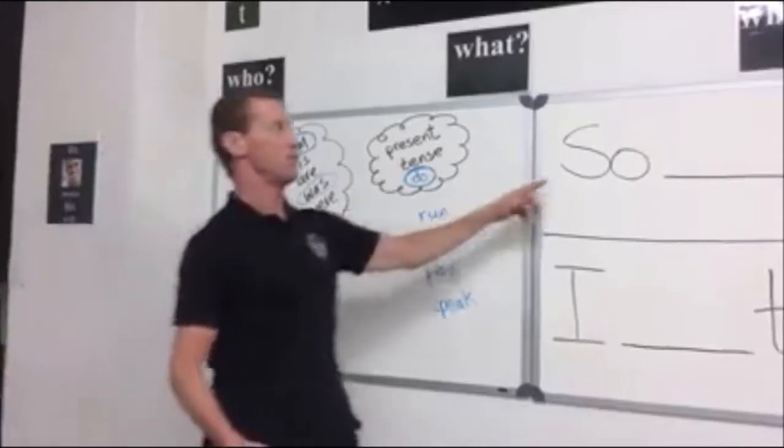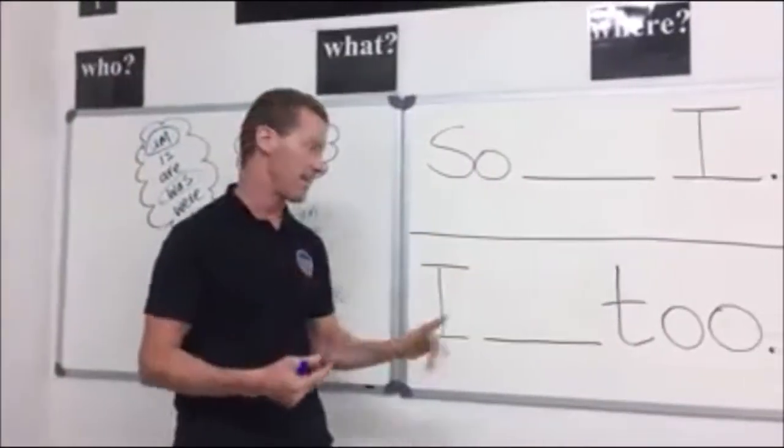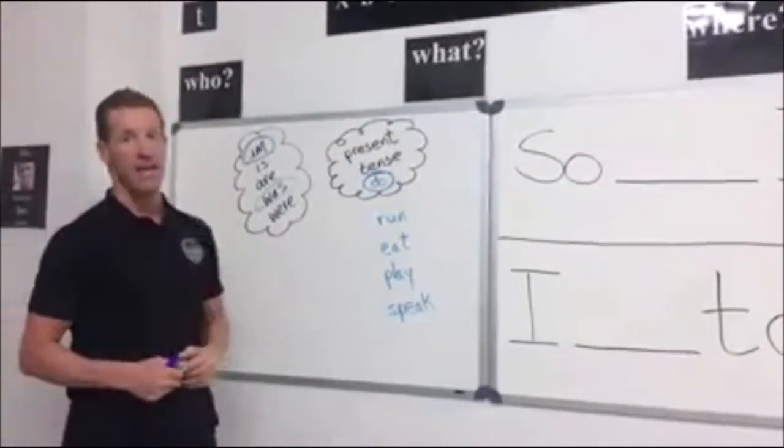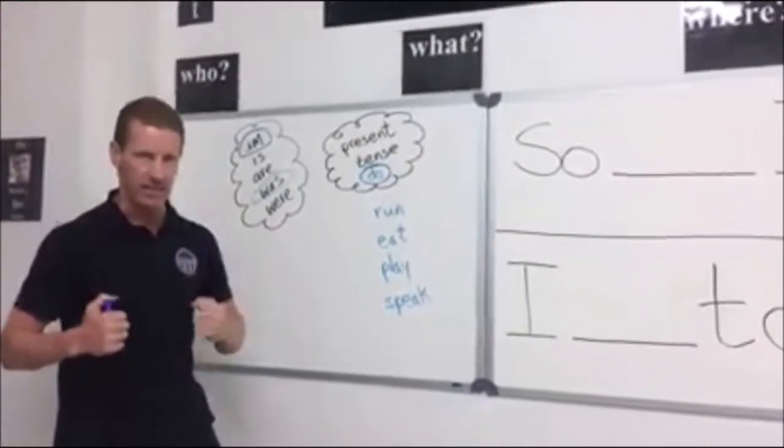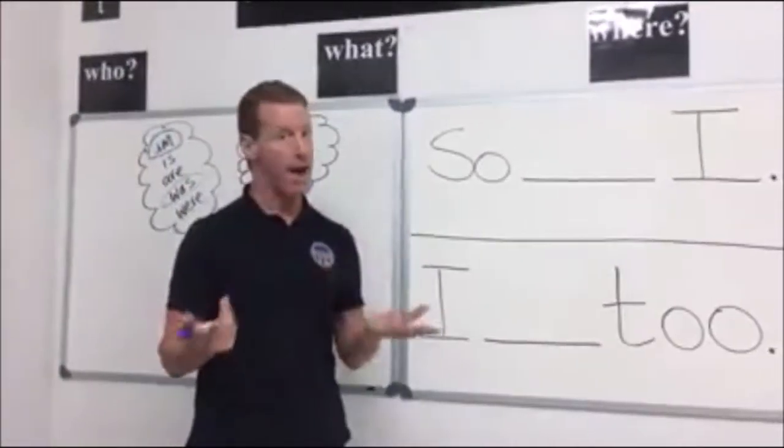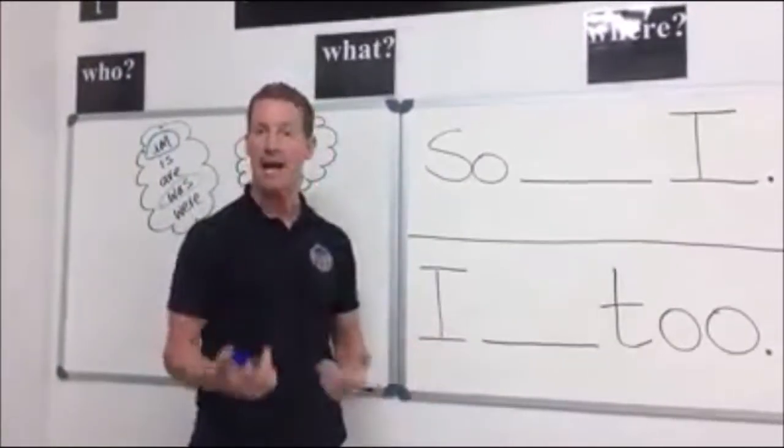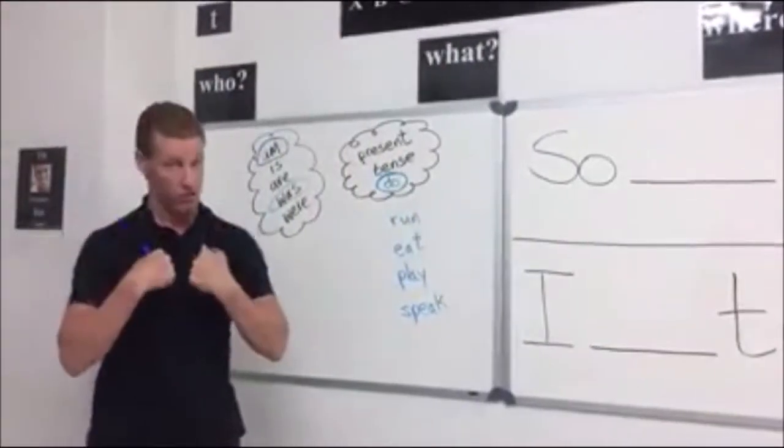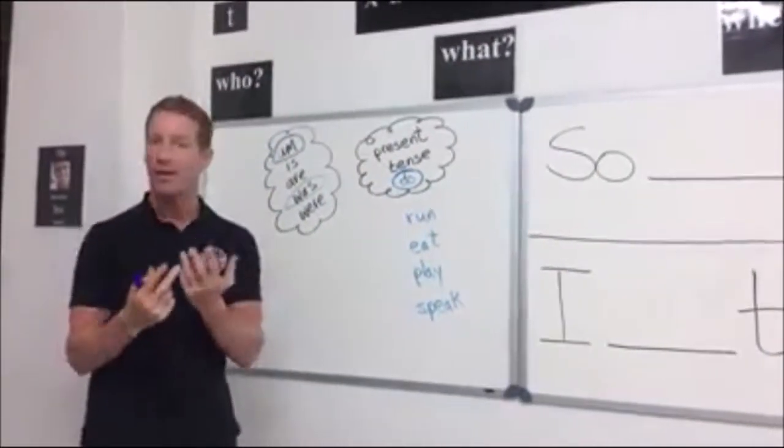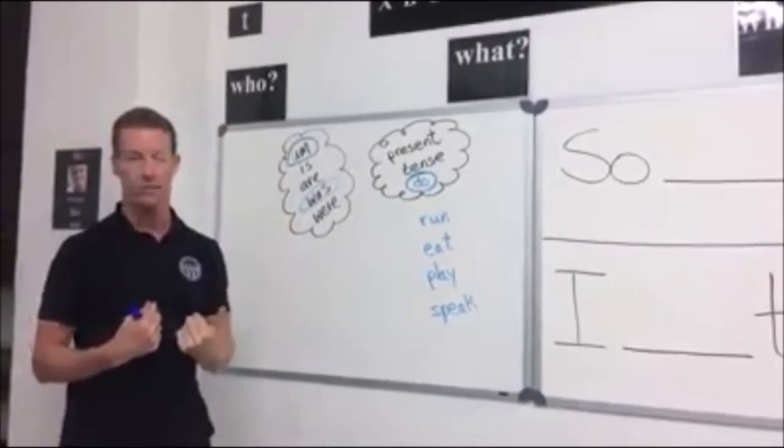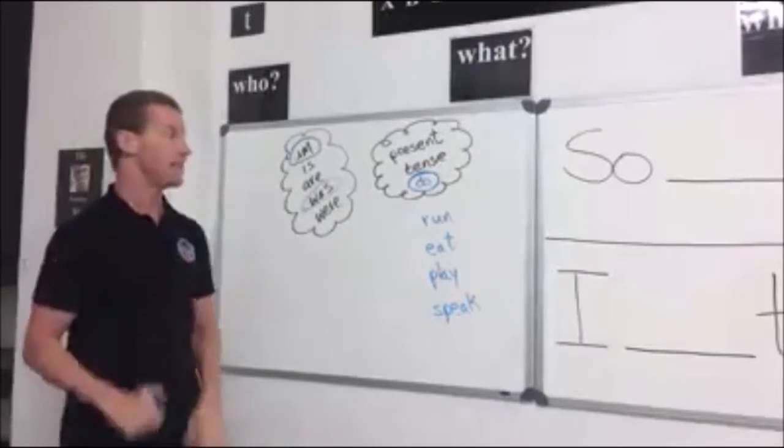If I say they were at the party last night same thing for me so was I I was too okay they are angry if it's the same for me so am I or I am too. So to be verbs if you're talking about me or I I'm always going to use am or was so am I so was I if it's in past.